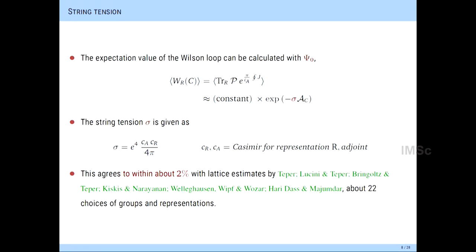This formula seems to make sense. People have done extensive lattice simulations using supercomputers, mostly due to Michael Teper at Oxford but also others, including high-precision calculations for SU(2). In every single case — 22 different choices of groups and representations — the answer is within 2% of this formula. This is dominated by the quadratic term, and corrections we have calculated are extremely small. The adjoint Casimir appears because the interactions in a pure gauge theory bring in structure constants through the commutator term, and the representation R appears because we choose a Wilson line in that representation.